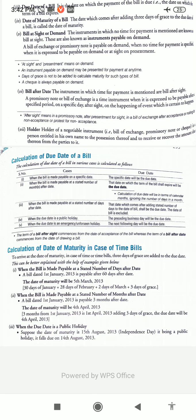Determination of the date of beginning of the bill depends on whether it is a bill after date or bill at sight. Where a bill is payable at a fixed period after date, the period begins to run from the date of drawing the bill. Where a bill is payable at a fixed period after sight, the period begins to run from the date of acceptance.